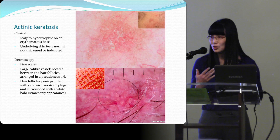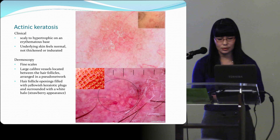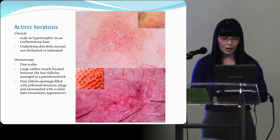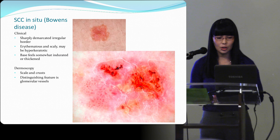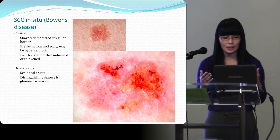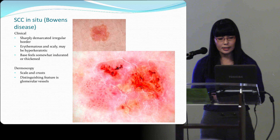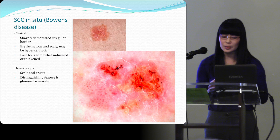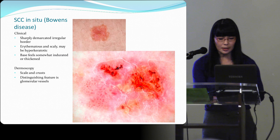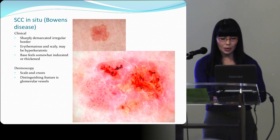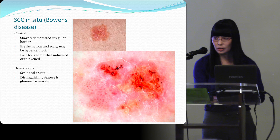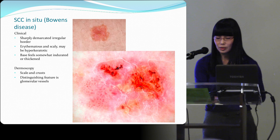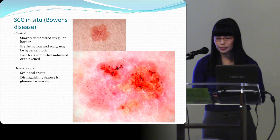The hair follicle openings have a yellowish keratotic plug surrounded by a white halo — we call this a strawberry appearance, very typical of actinic keratosis. In Bowen's disease, you have a sharply demarcated irregular border; Bowen's is SCC in situ. It's erythematous and scaly, can be hypertrophic, but the base feels a bit more thick and indurated. On dermoscopy you see scale and crust, and very distinguishingly, so-called glomerular coil dot vessels.